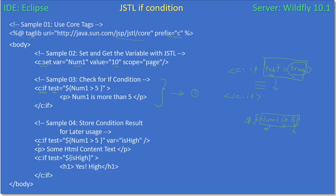Now let's look at the second way. We use C:if test equal to the same expression, but here we also use one more attribute: 'var' equal to 'isHigh'. Here we are closing the tag without a body — instead, we are storing the condition output inside a variable called isHigh. Some HTML content follows to show that isHigh will now hold a value.